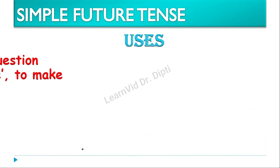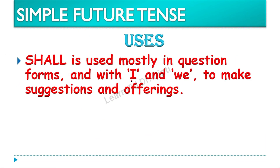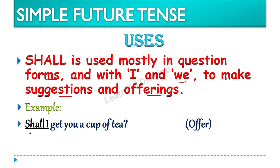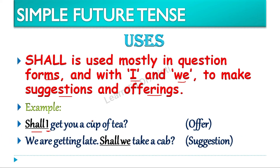Now let us see where shall is used. Shall humnay kaha tha zyadha tar I or we mein question form mein use karte hain, jab hum koi suggestion de rahe honge ya phir offerings de rahe honge. First example: Shall I get you a cup of tea? — yahaan par offer kar rahe hain, aur I ke saath shall laga hai. Another example: We are getting late. Shall we take a cab? — yahaan par we ke saath shall ka use kiya hai in the question form.